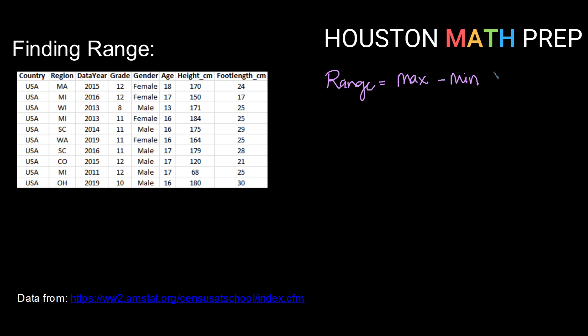So let's go ahead and for each of the quantitative data that we have here, let's find our range. We'll just go left to right. Our first set of quantitative data is the year. So for the range of the years, we need to find our maximum year. Scanning through, that appears to be 2019.